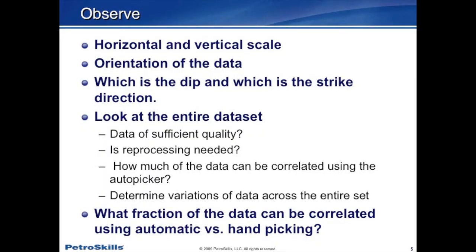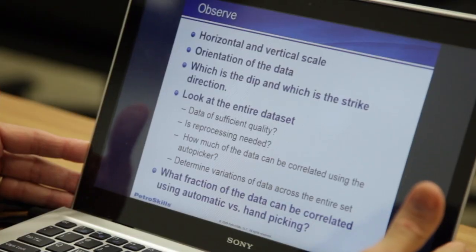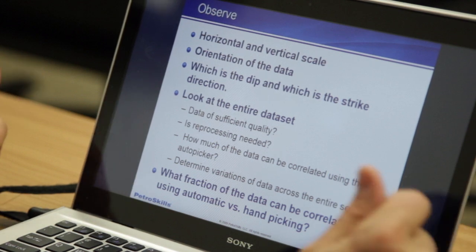A couple of other things to observe: what are the horizontal and vertical scales? The horizontal scale is in feet or meters and the vertical scale is in time, so there's a relationship between those. If my scale is compressed horizontally and expanded vertically, it will distort the dip angle on faults, which can lead to less accurate interpretations. How is the data oriented — is it up-dip, down-dip, a strike line running parallel to bedding planes, or perpendicular to dip? You want to look at the entire data set before you start interpreting — deciding whether the data is good enough to meet objectives, whether to reprocess it, how much to rely on the auto picker, and where quality varies across the data set.